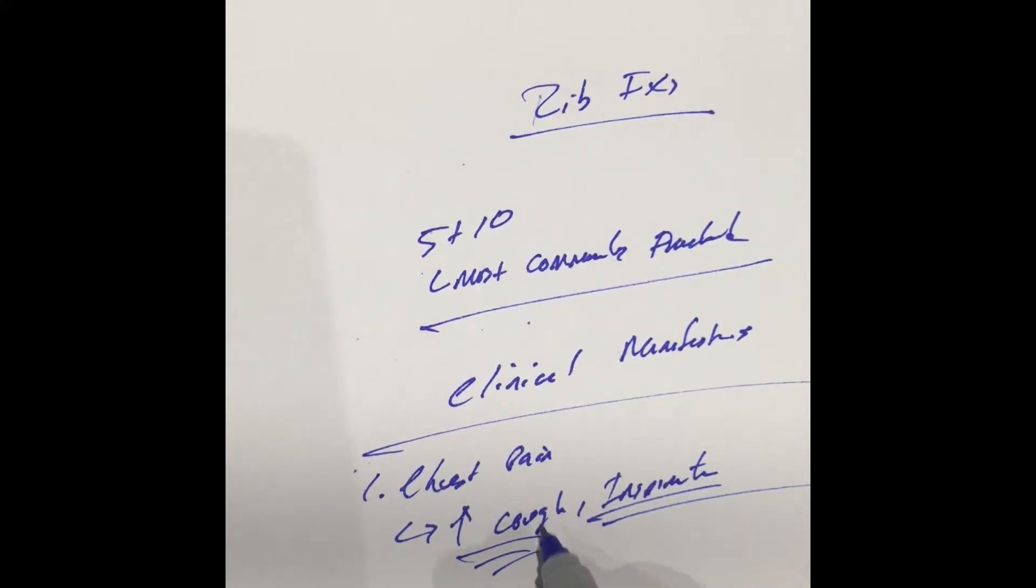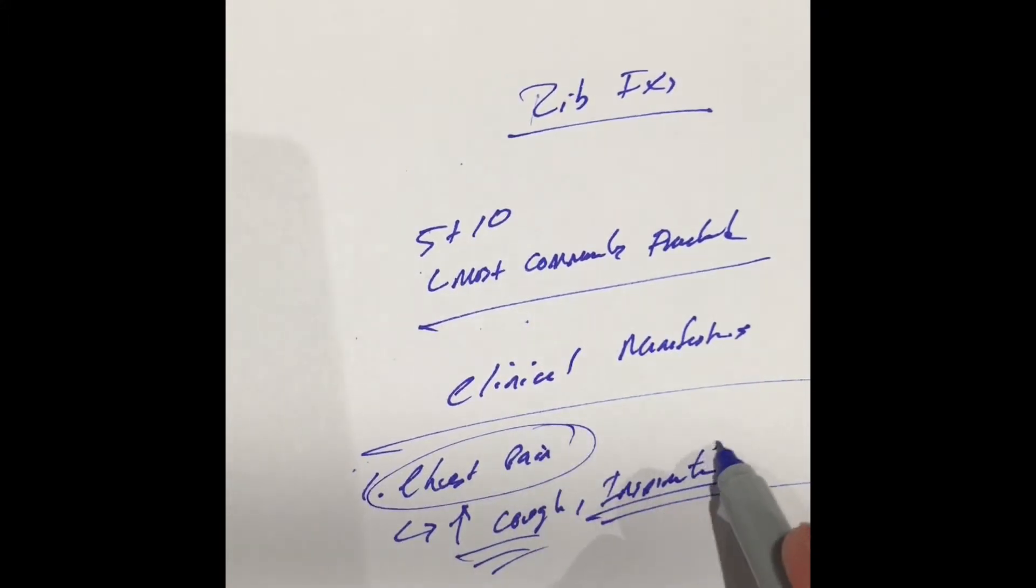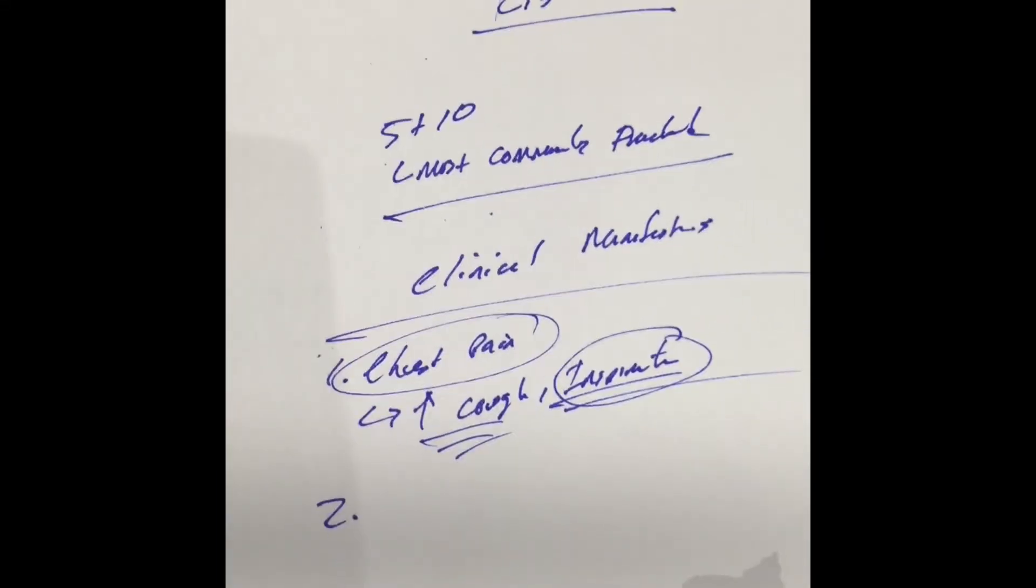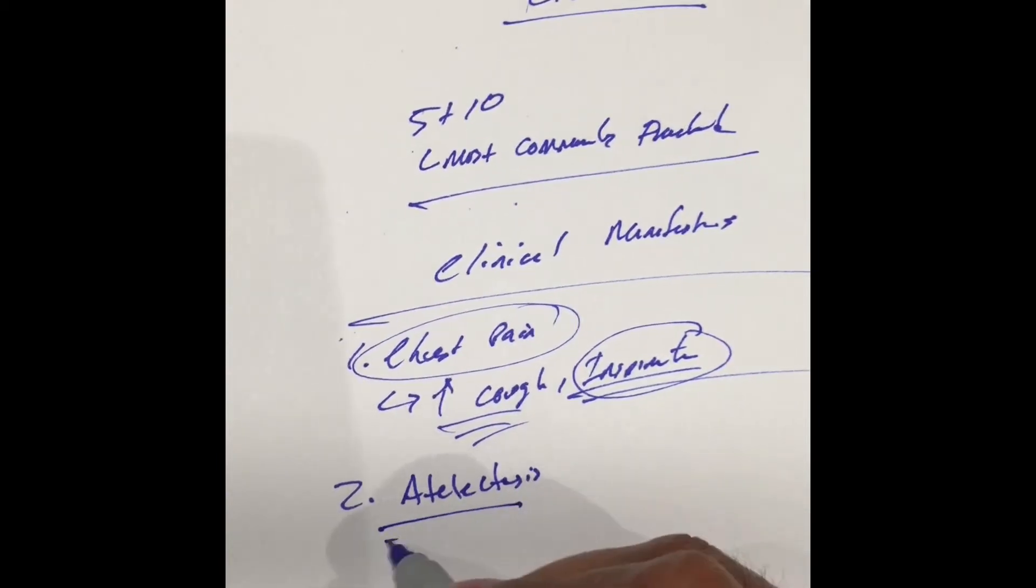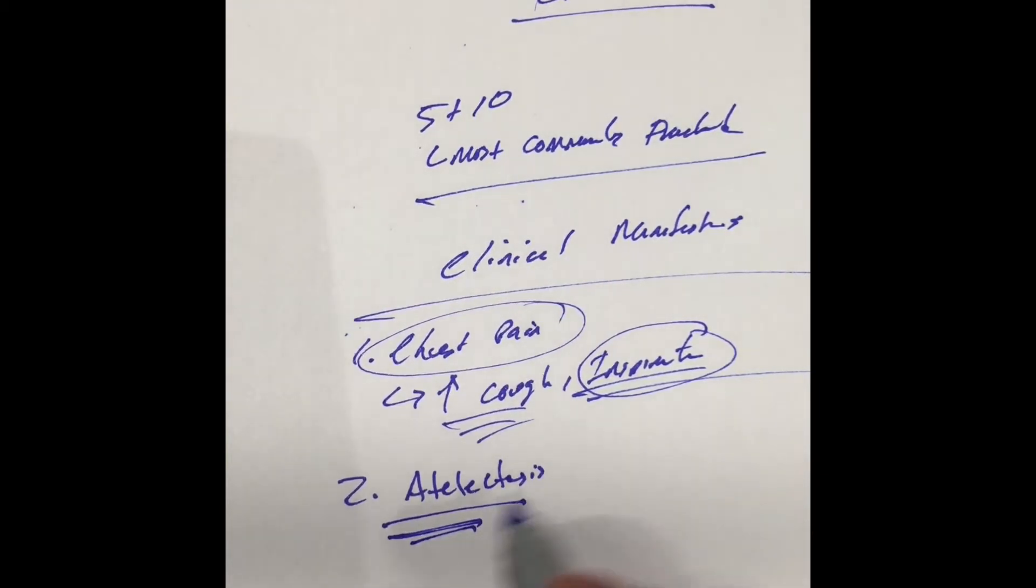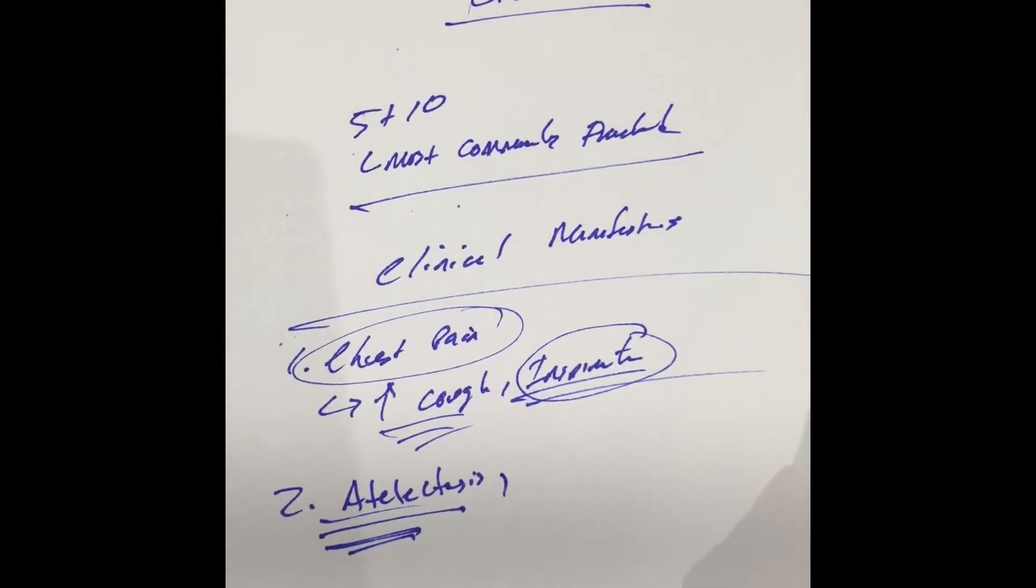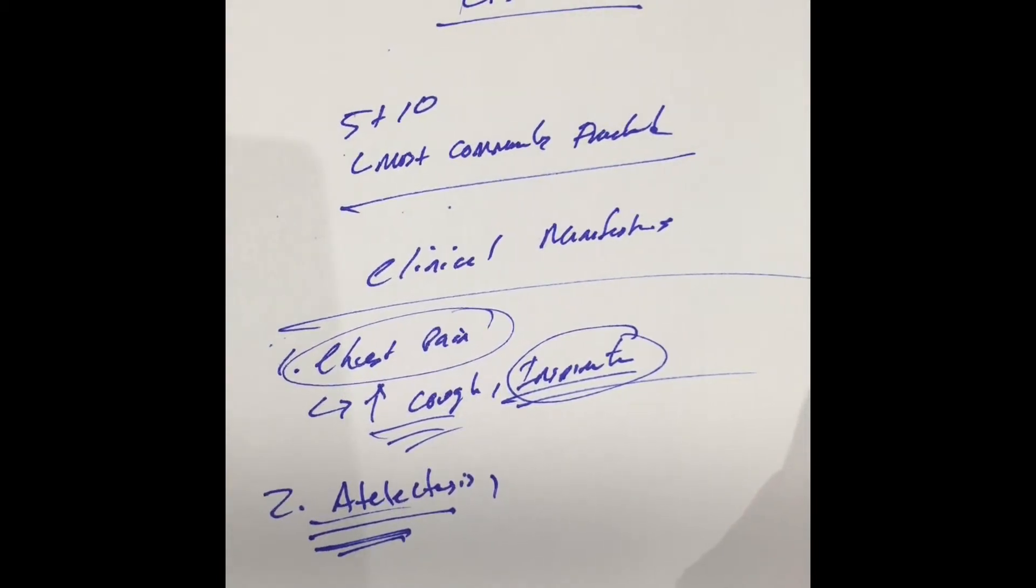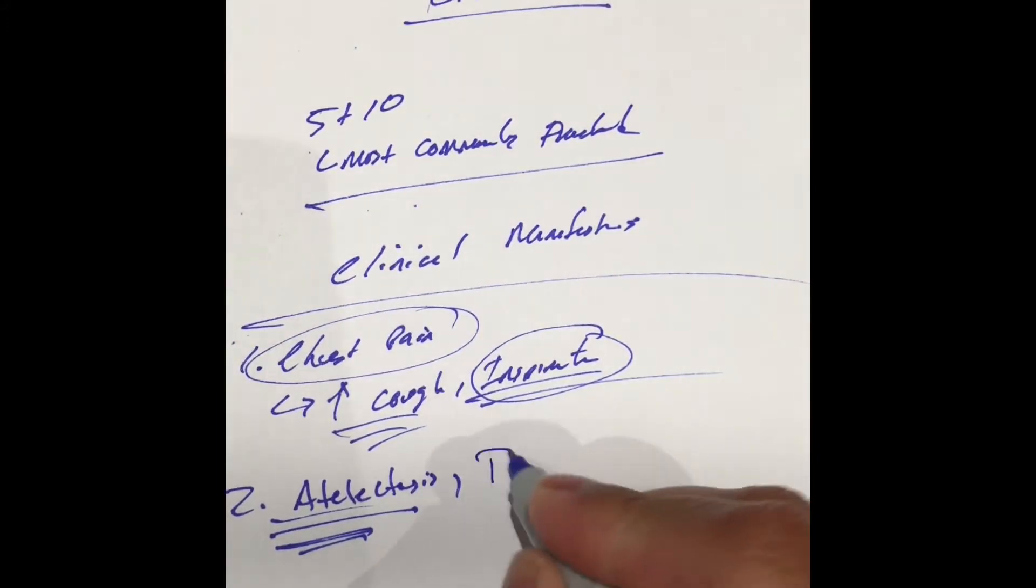Since this patient does have chest pain, especially during inspiration, it's going to make it very difficult for these patients to take very deep breaths. As a result of not taking deep breaths, this makes it very likely for the patient to suffer from atelectasis or collapse of those alveoli. Again, that patient not taking those deep breaths is going to make it very likely for that patient to suffer from pneumonia.